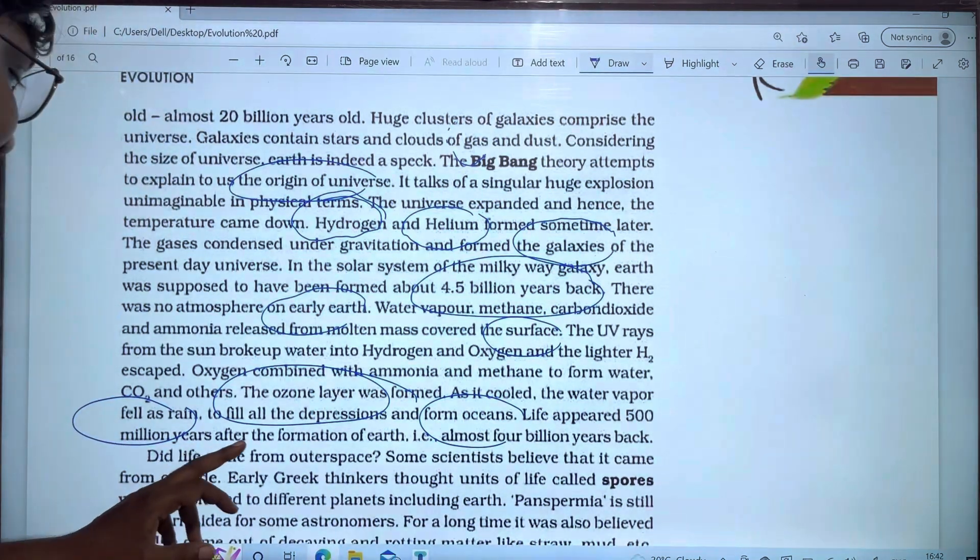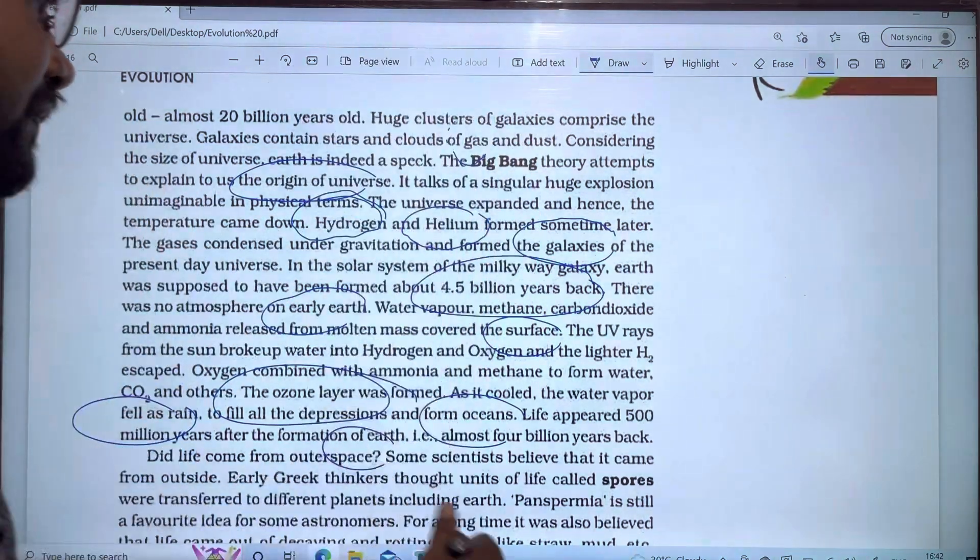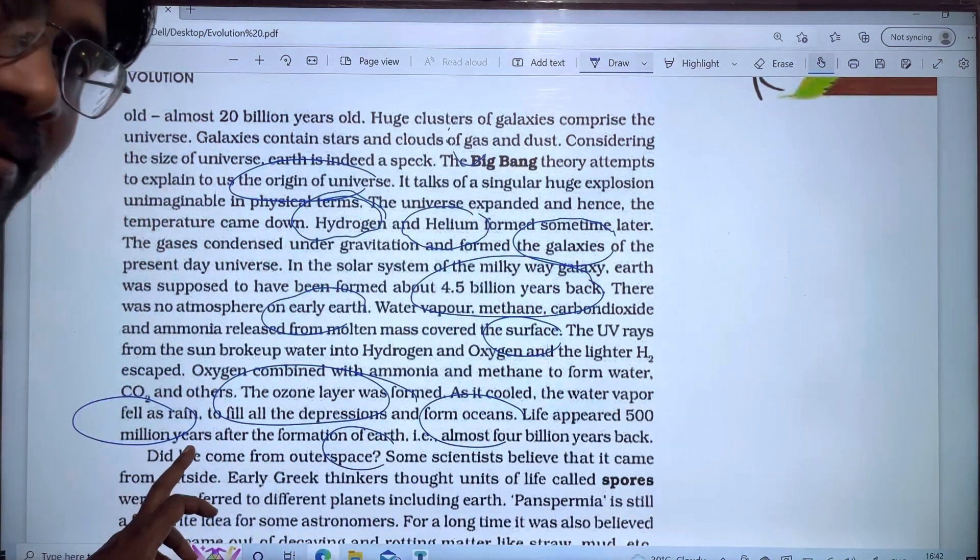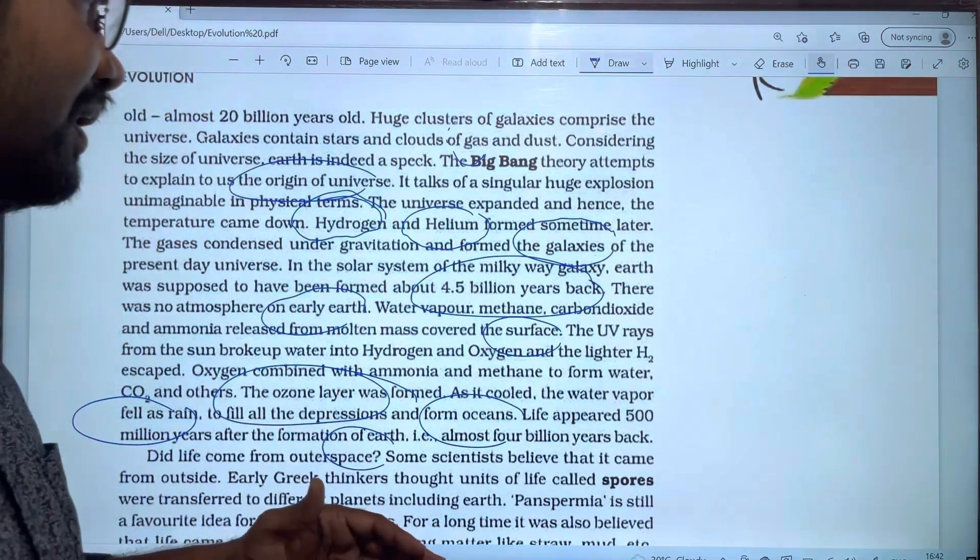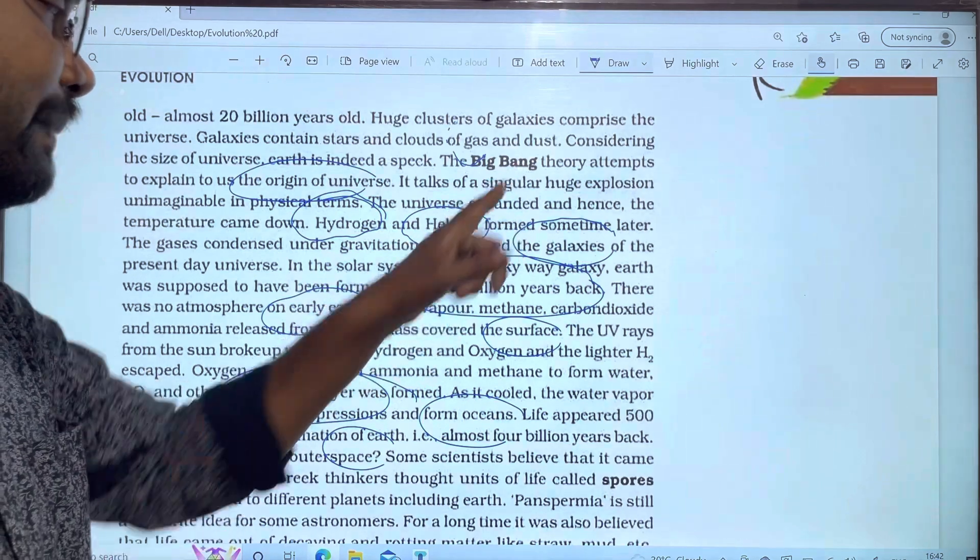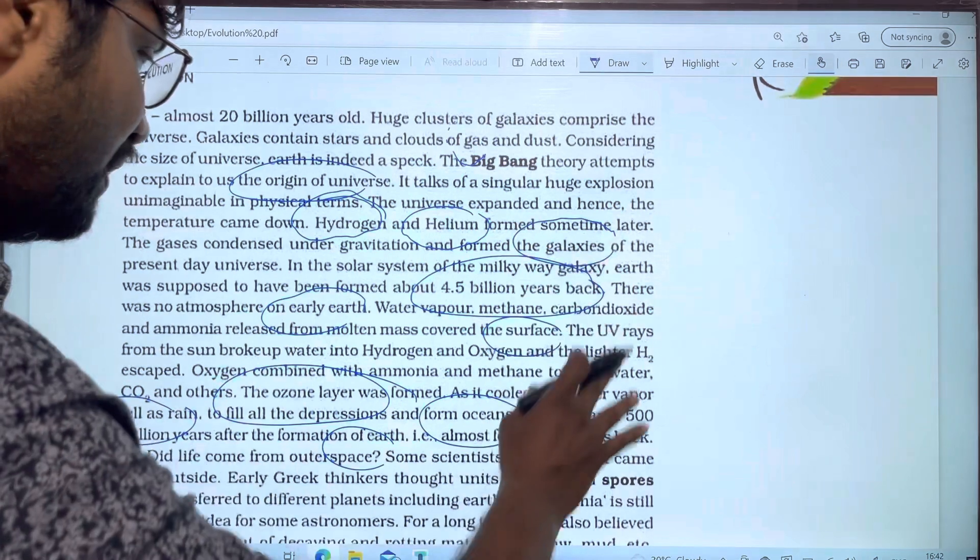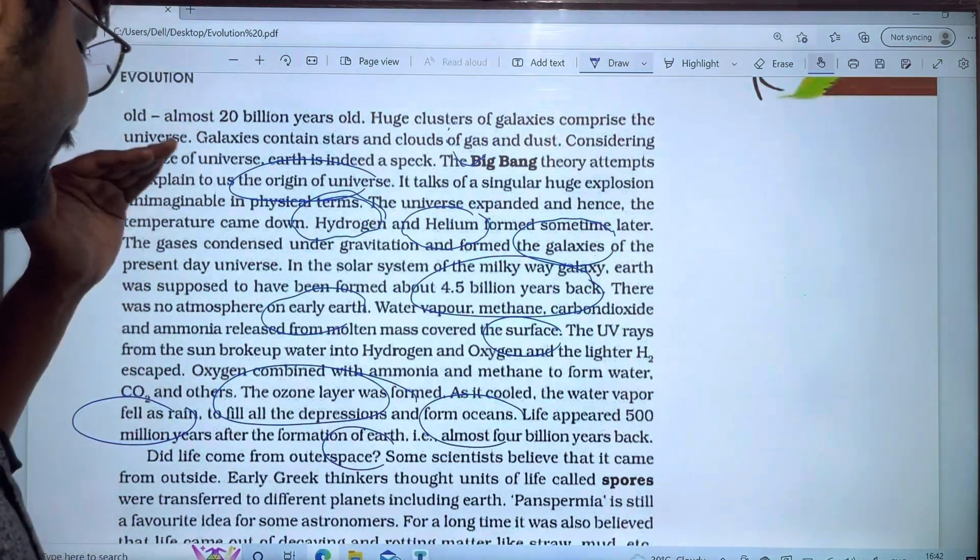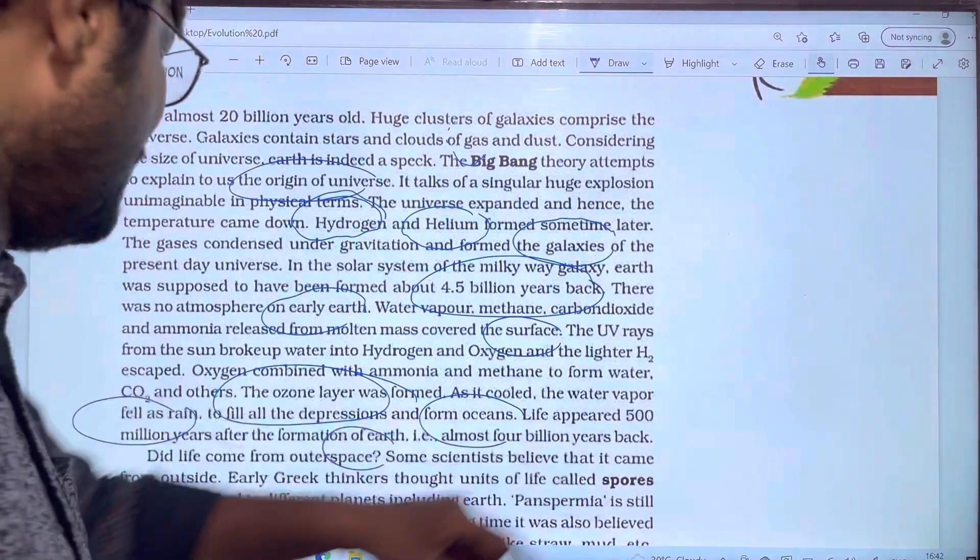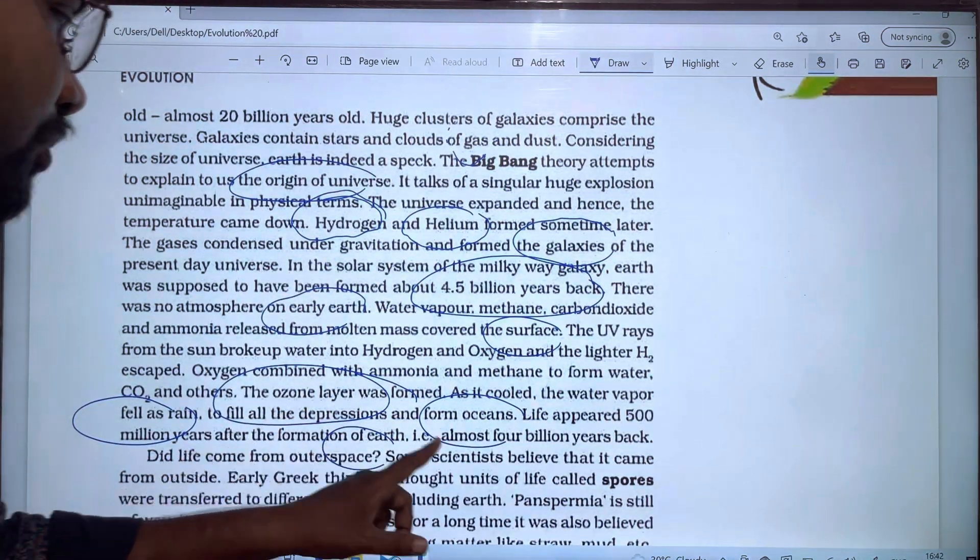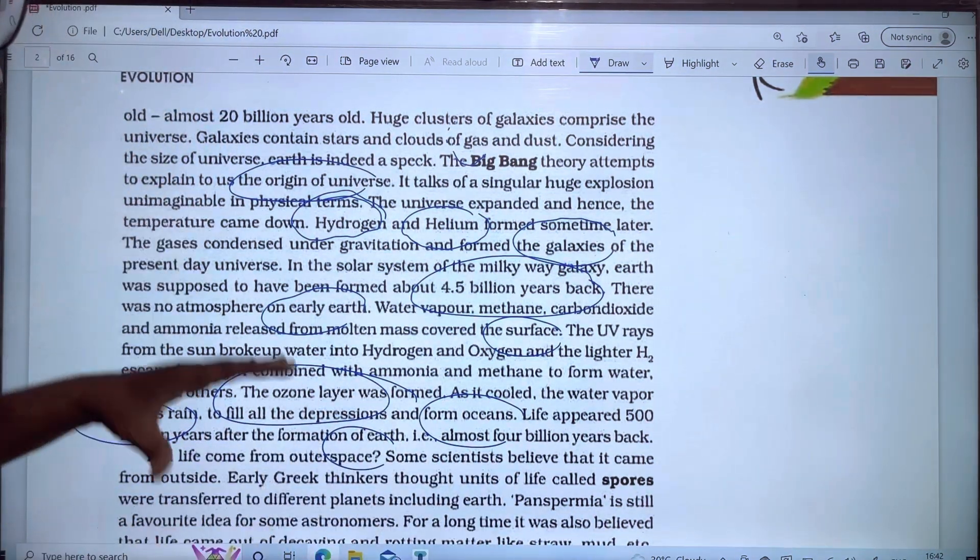Life appeared 500 million years after the formation of Earth. After the formation of Earth, the Earth formed 500 million years later, almost 4 billion years later.